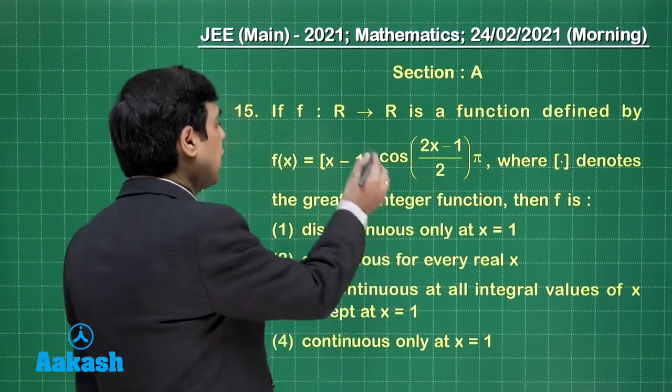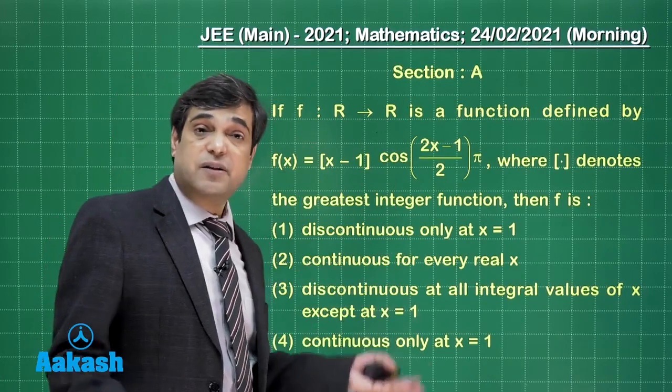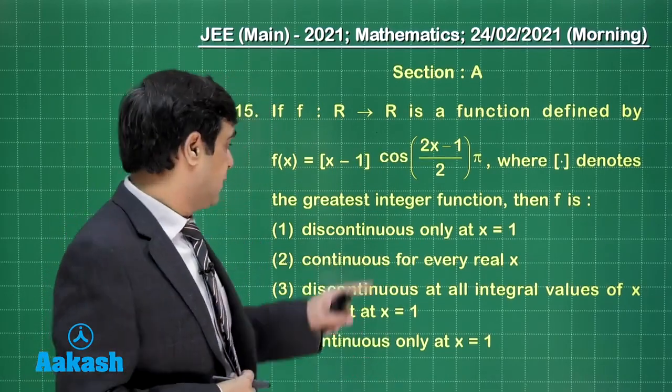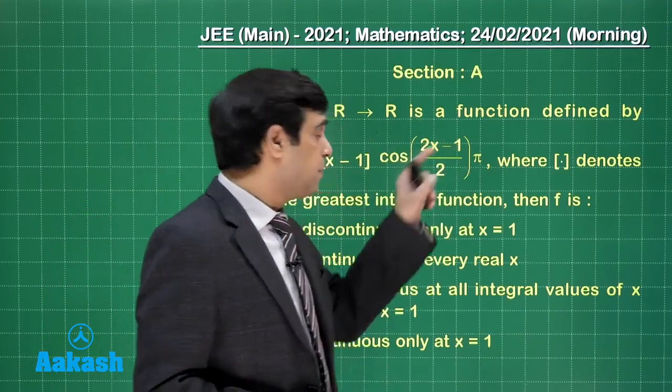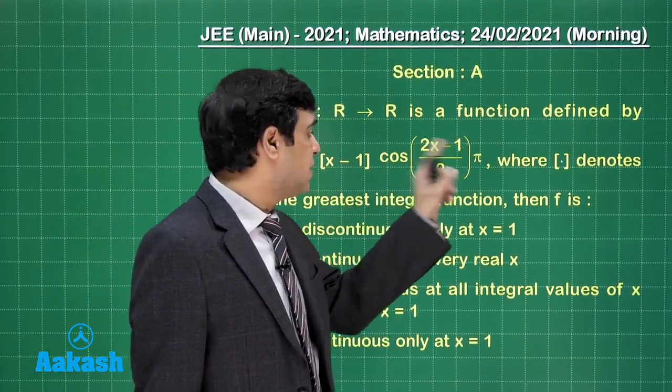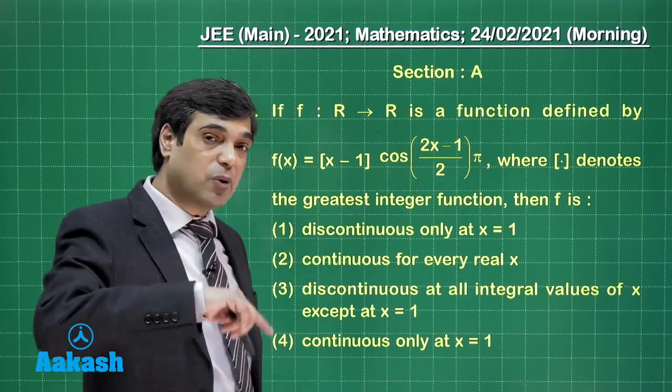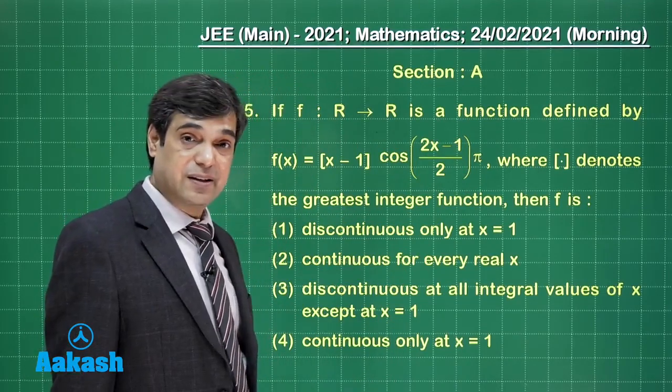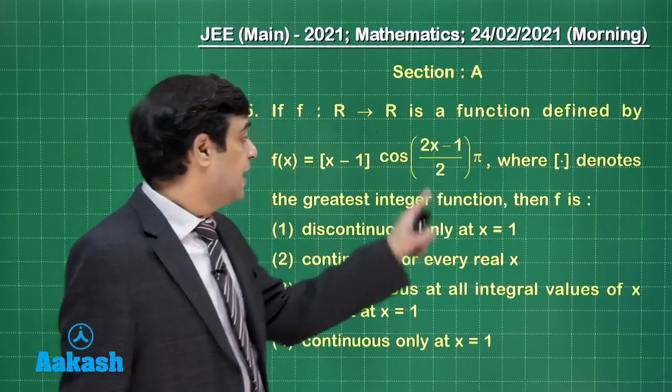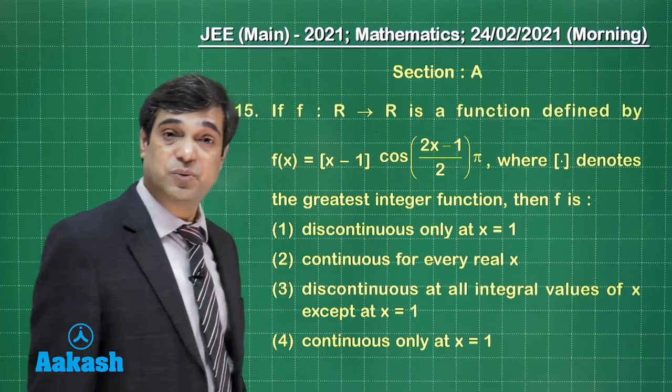Clearly when you talk about the greatest integer function, greatest integer function is discontinuous for all integral values of x. But when you look at this term which is in multiplication, this is cos[(2x minus 1) upon 2] into pi. When you talk about integral multiples of x, when you talk about integral values of x, what is going to happen?